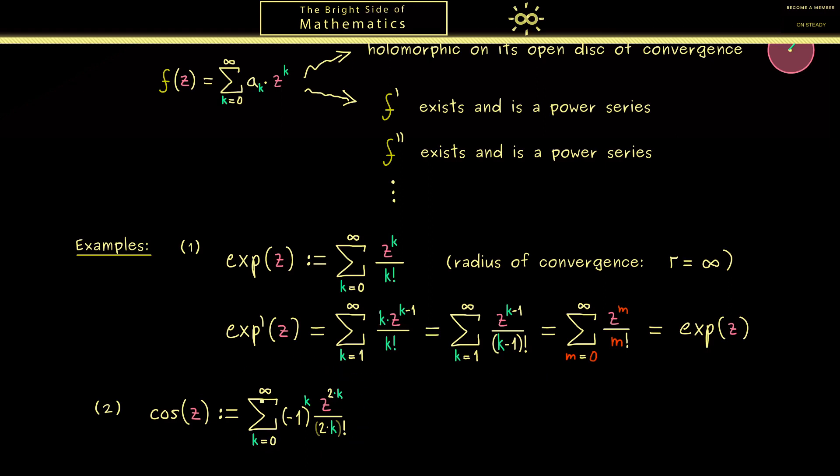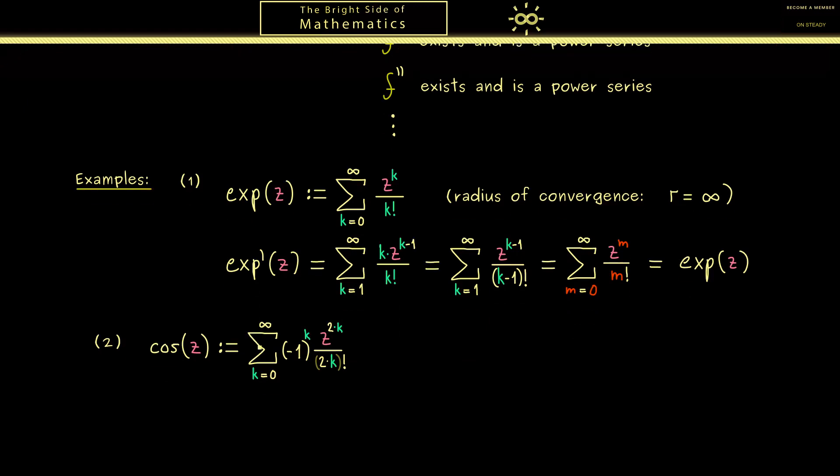Therefore I would suggest that we do something else here and look which connection we find between the exponential function and the cosine function. Indeed, we find something with the help of complex numbers, because i squared is minus 1. For this reason, one idea would be to put i times z into the exponential function. This is not so complicated because we have the whole power series here. Then what we should see is here in the numerator we have essentially 4 different cases. We get this because the powers of i have a periodic structure.